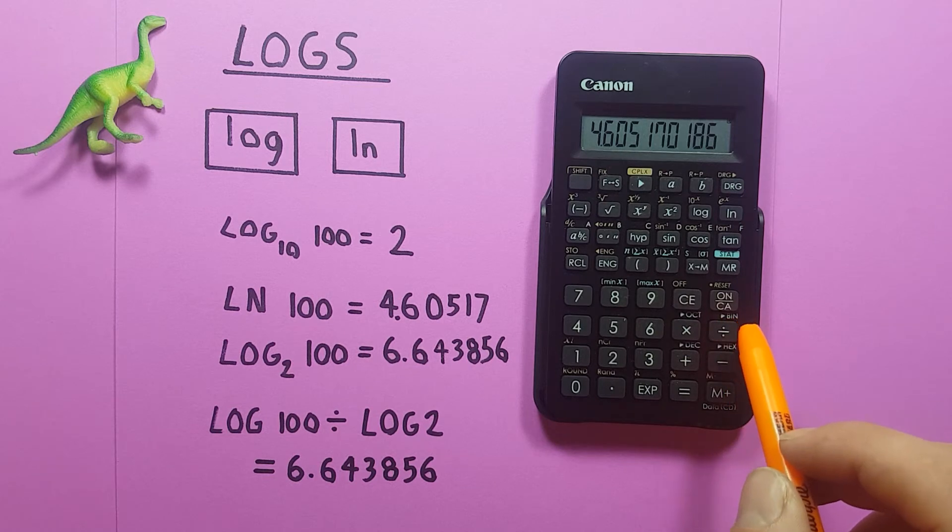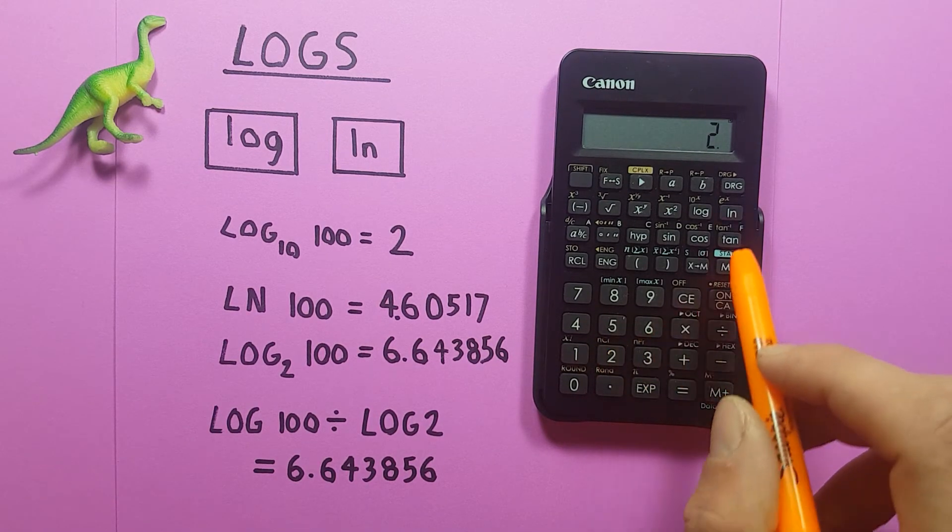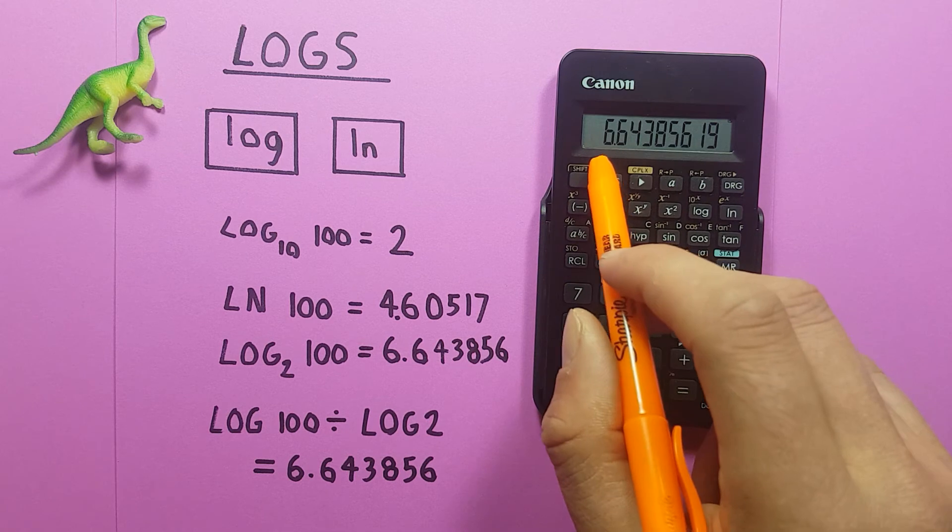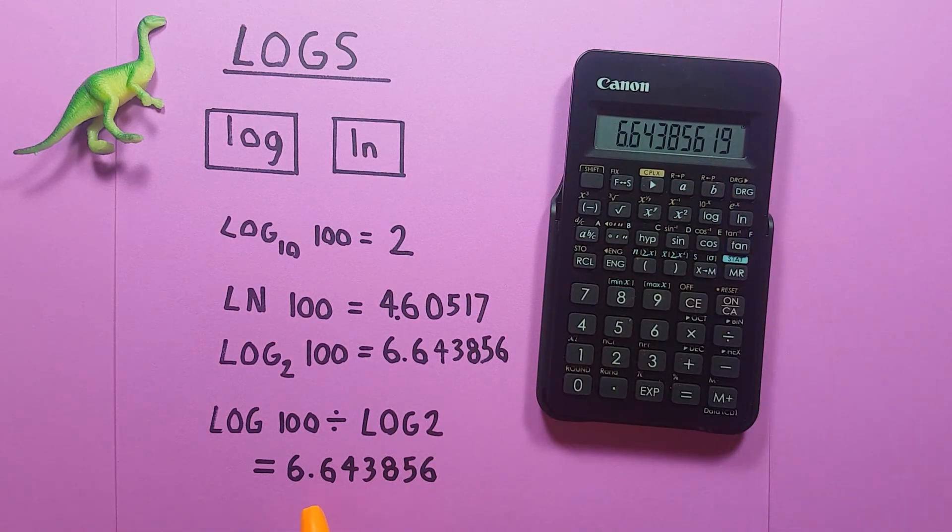Alternatively, using natural log: ln 100 divided by ln 2 equals the same answer, 6.643856, which is log base 2 of 100.